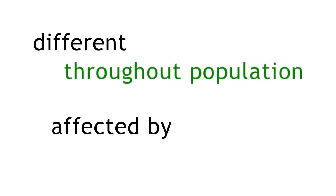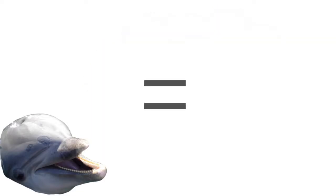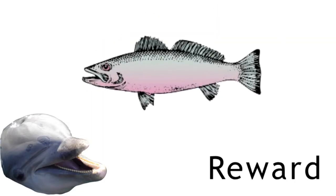Learned behaviour is different throughout the population and is affected by the environment. For example, a dolphin can learn to perform and jump through a hoop. This behaviour has been affected by the dolphin's environment. It has been taught by a trainer, and it knows that if it jumps through the hoop, it will receive a reward. A wild dolphin wouldn't necessarily know to jump through a hoop if presented with one.